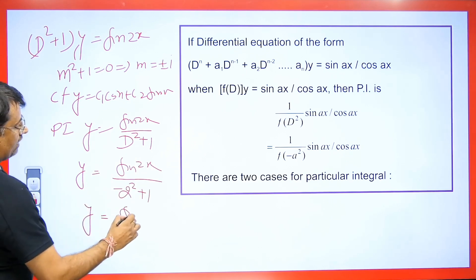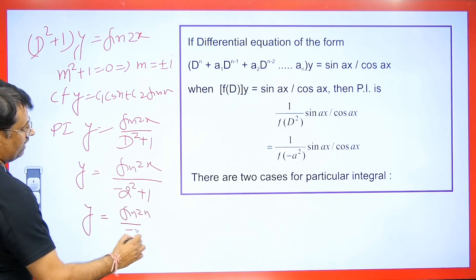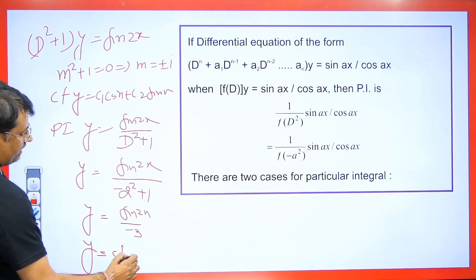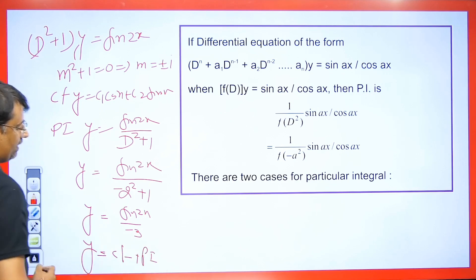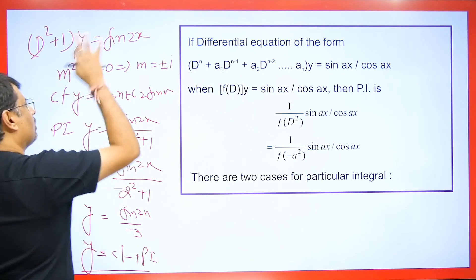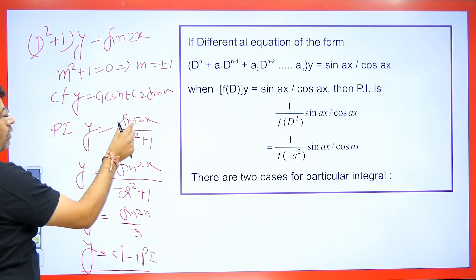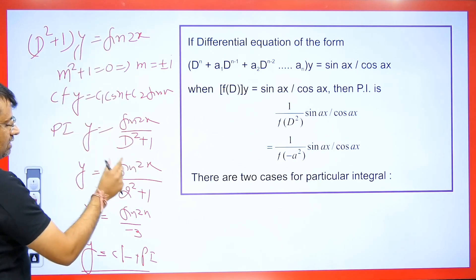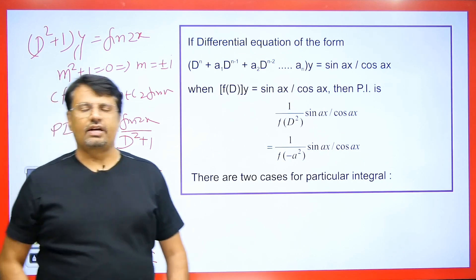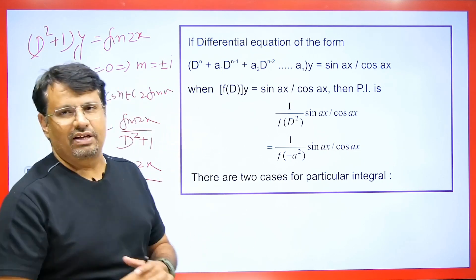So y = sin 2x / (−3). The final answer will be CF + PI. In this way we solve this question. If cos is given instead of sin, it is the same process — we get cos here in place of sin in the final answer as well. The rules are almost the same for sin and cosine.